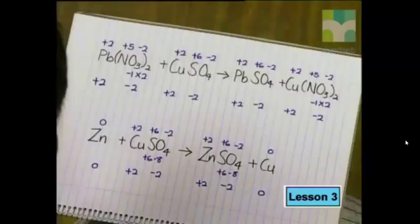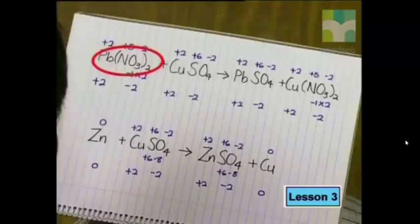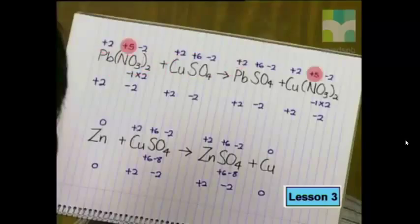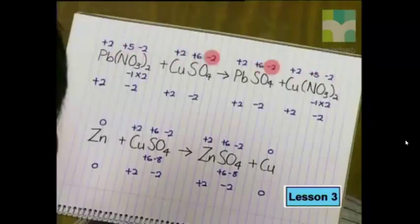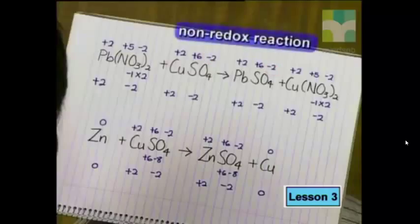Here are the answers. First I assigned oxidation numbers using the rules we established in the previous lesson. For the reaction in the first beaker, where I added lead 2 nitrate to copper 2 sulfate, the oxidation numbers of the elements didn't change. The arrangement of electrons in all the atoms remained the same. Therefore, this is classified as a non-redox reaction.